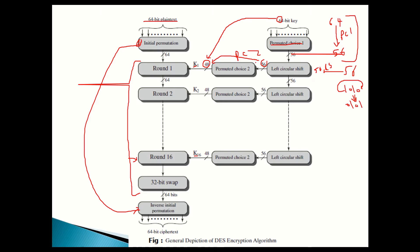In the second round, the same process repeats: take the 56-bit key, do a circular shift, then apply PC2. This happens for all 16 rounds. So from the original 64-bit key, we generate 16 different subkeys, each derived from the main key.